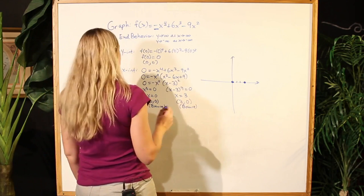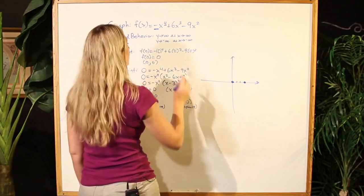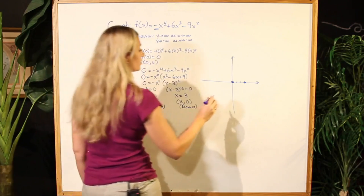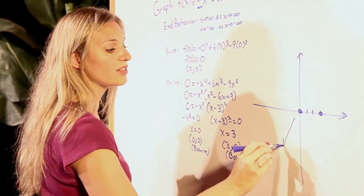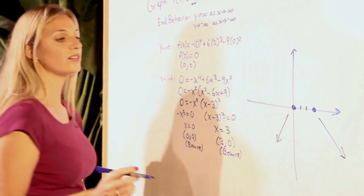Now, we know that our end behavior is going to be going towards negative infinity in the y's. So on both cases here, our graph will be pointing downwards.